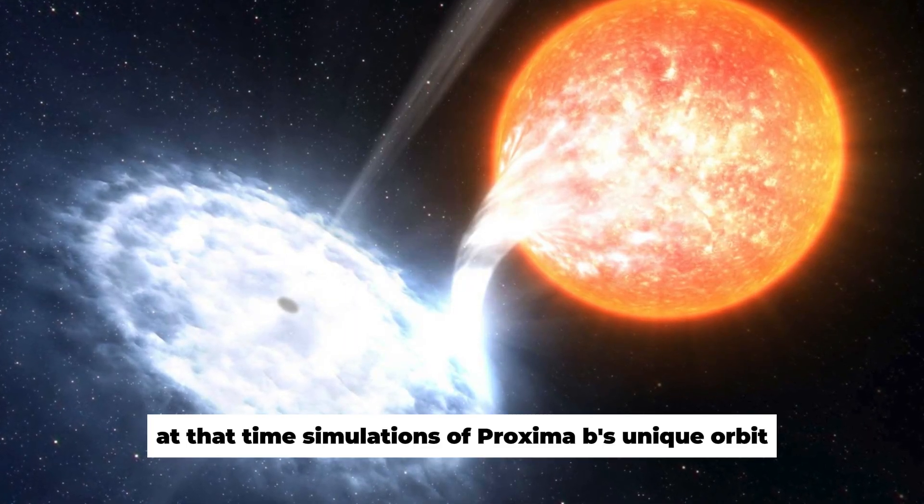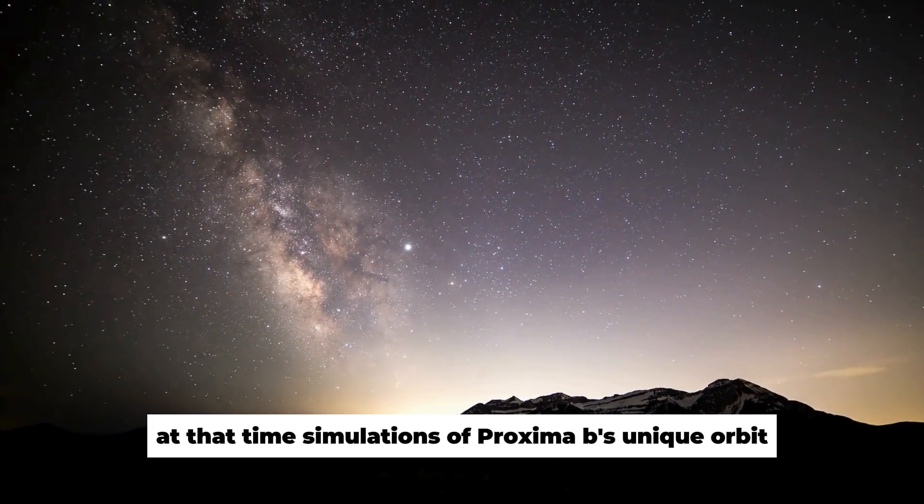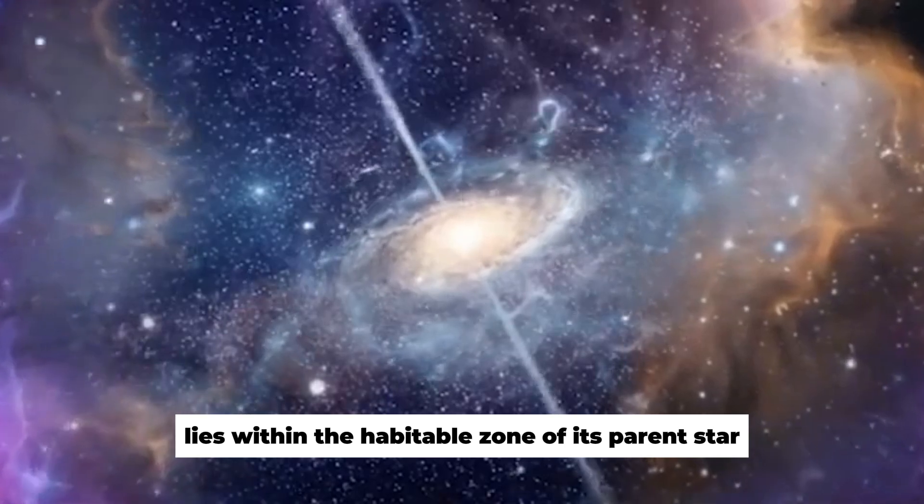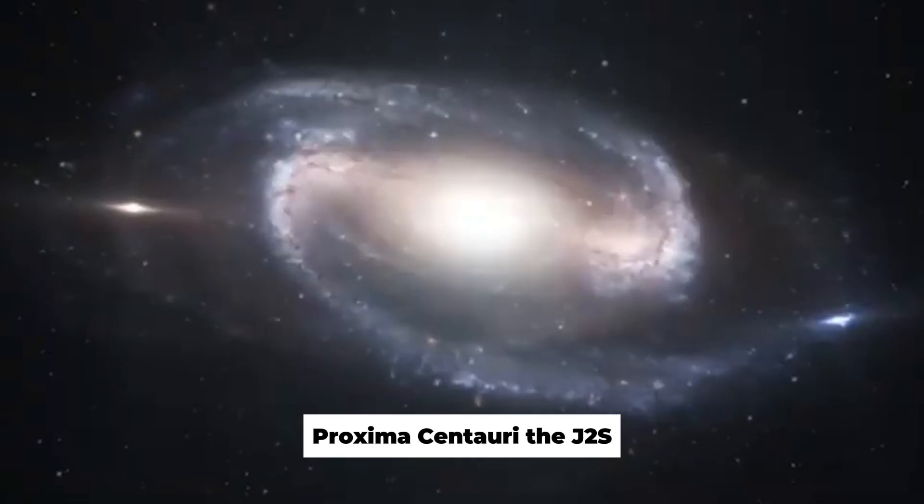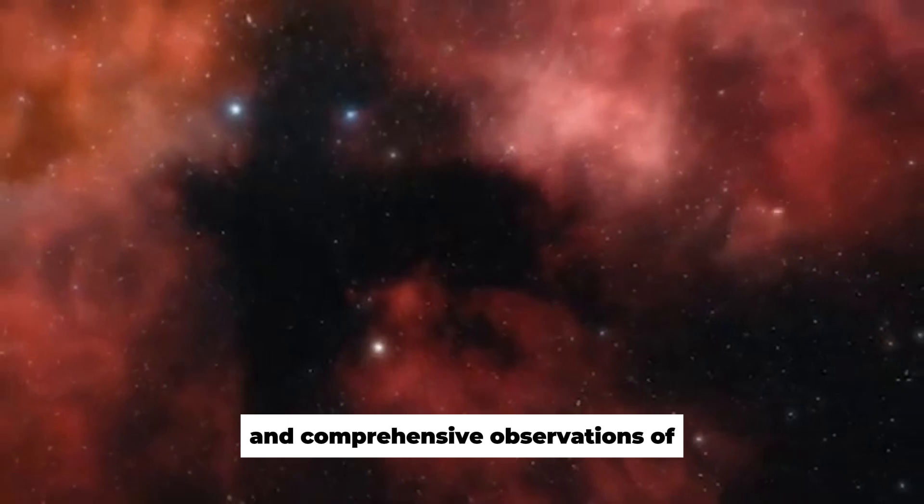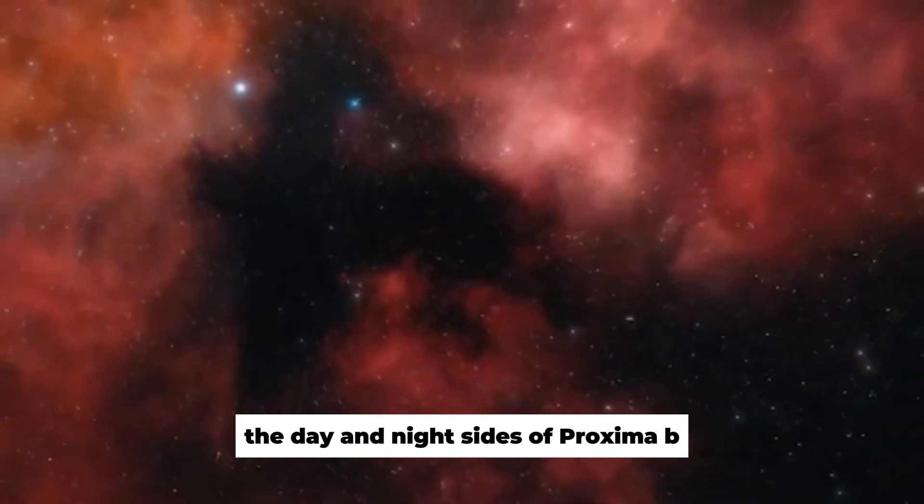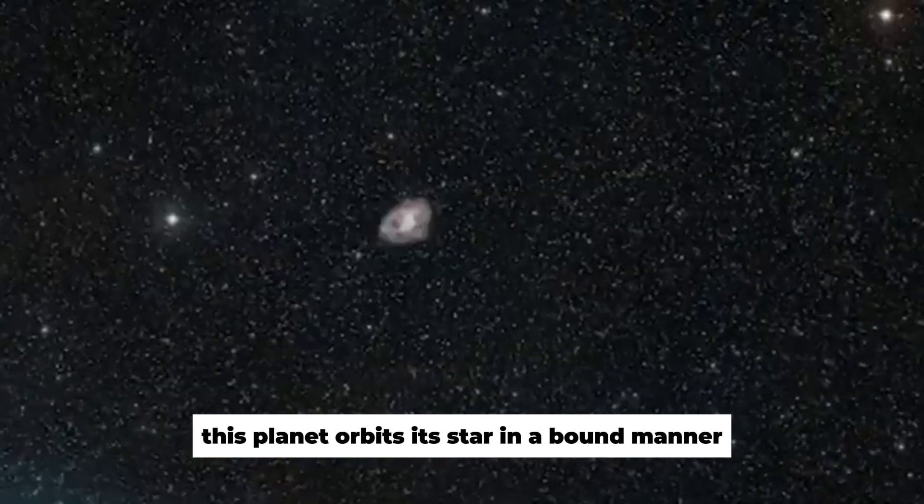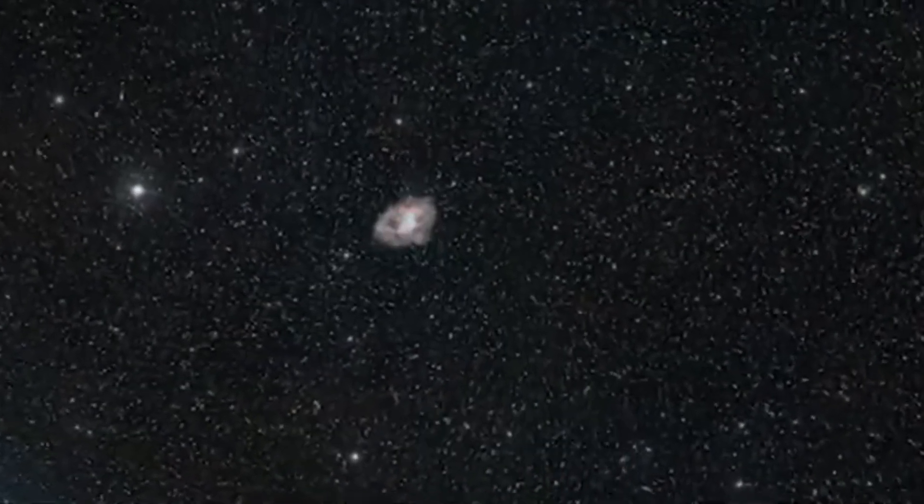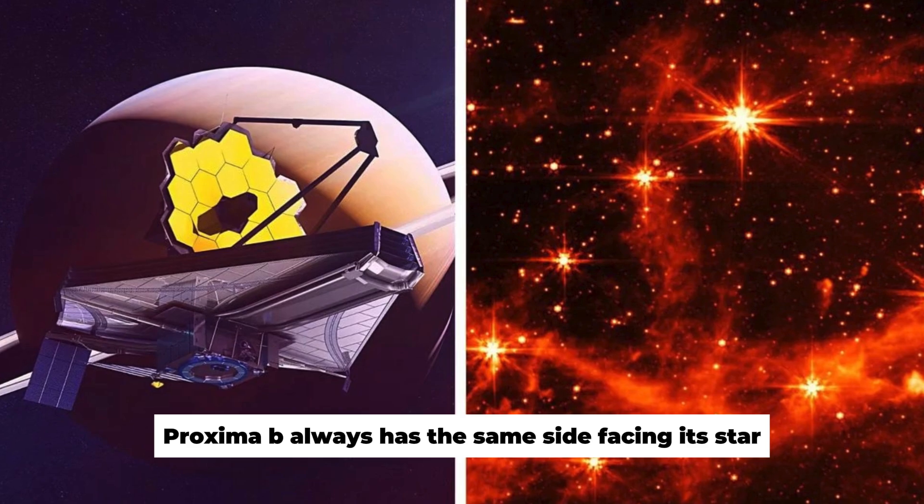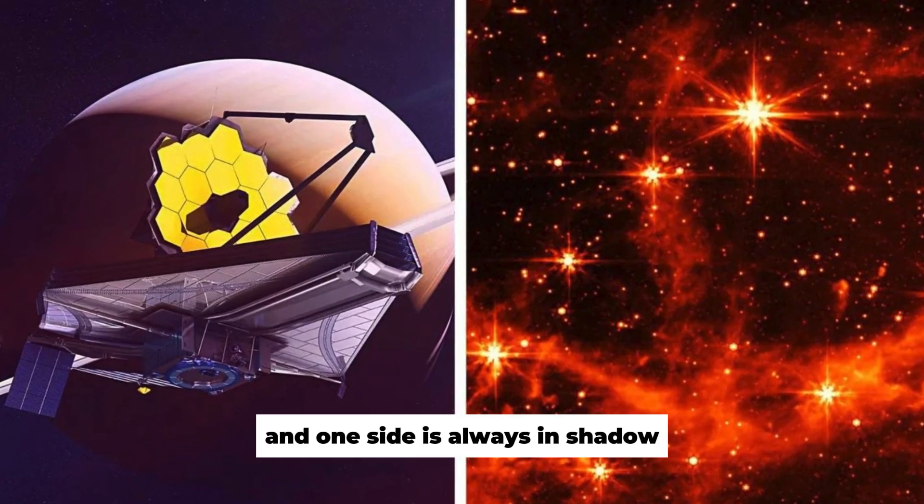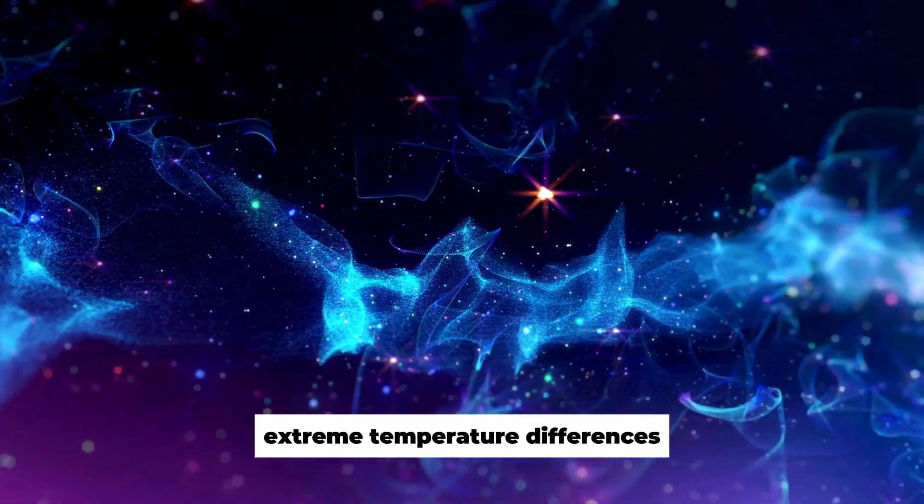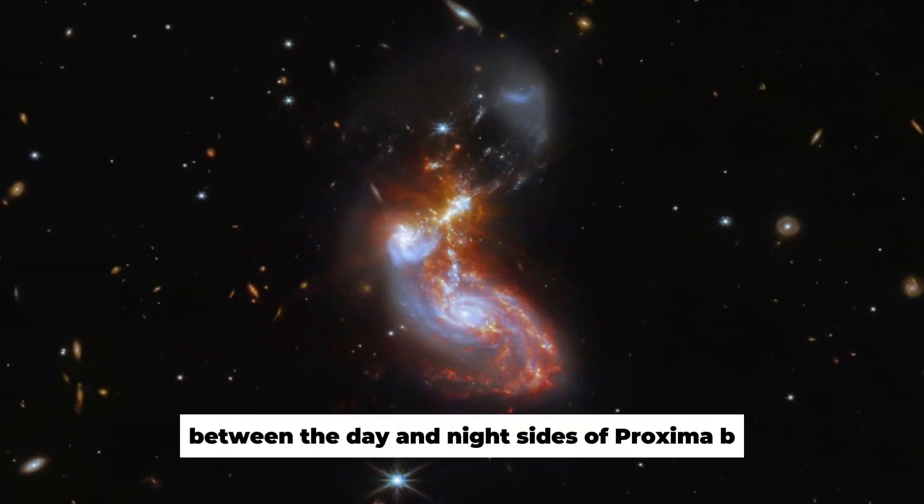At that time, simulations of Proxima b's unique orbit already showed that the highly interesting exoplanet lies within the habitable zone of its parent star, Proxima Centauri. The JWST will carry out regular and comprehensive observations of the day and night sides of Proxima b. This planet orbits its star in a bound manner, just as our Moon orbits us. Proxima b always has the same side facing its star, and one side is always in shadow.